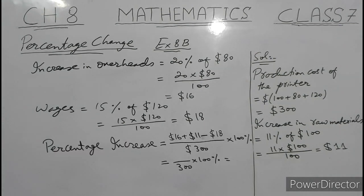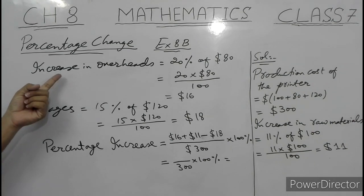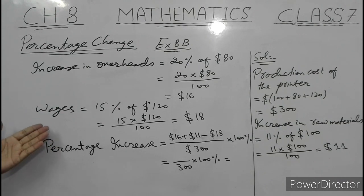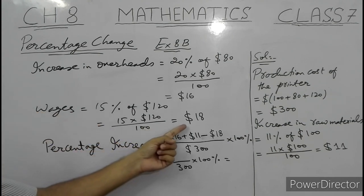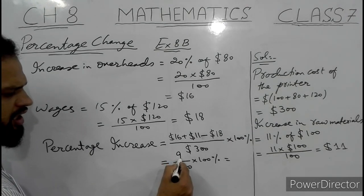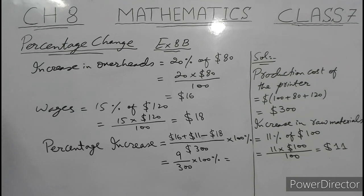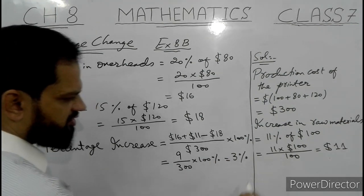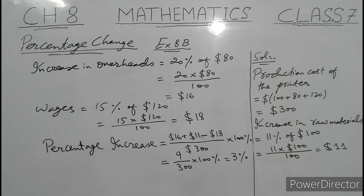As we have to find the percentage increase, the numerator will be the increase, obtained by adding both the increases in overheads and raw materials and subtracting the decrease in wages, which is $18. The denominator is the original production cost of $300. Using a calculator, the numerator becomes 9, and we get a 3% increase. This means out of every $100 of the original cost, there is a $3 increase.